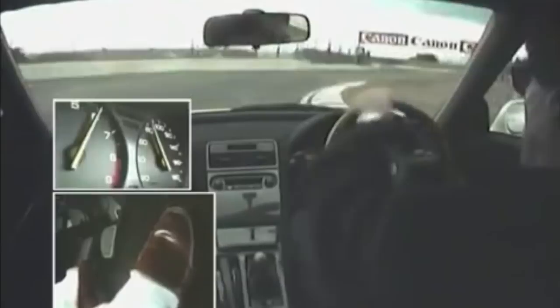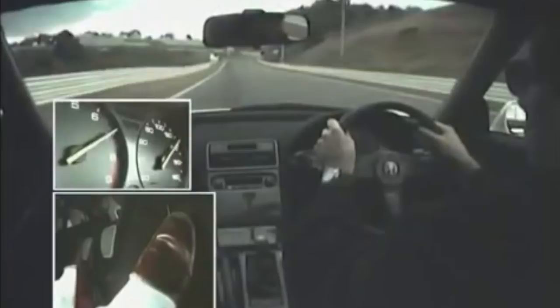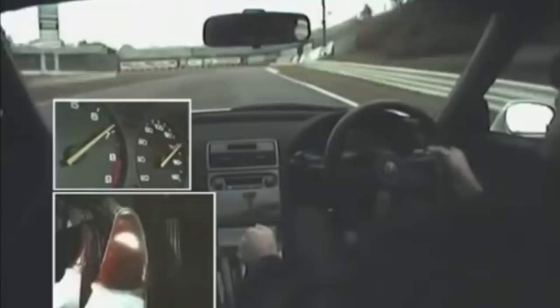Heel and toeing is a technique whereby you match your car's engine speed or revs to your car's wheel speed to create a smooth downshift. If you don't match the engine's revs to the wheel speed you risk locking up the driven axle. You do this by using your right foot across both the brake and accelerator pedals, toe on the brakes and your heel or the side of your foot on the accelerator pedal.